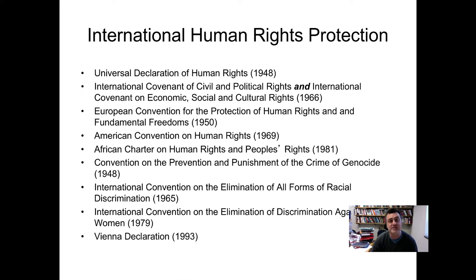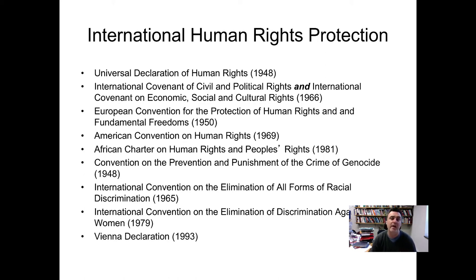These are all covenants and different protocols dealing with human rights protection — some regional ones and then international ones. The most important ones after the UDHR are the International Covenant on Civil and Political Rights and the International Covenant on Economic, Social, and Cultural Rights, both passed in 1966.